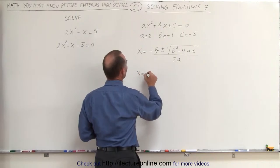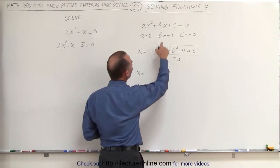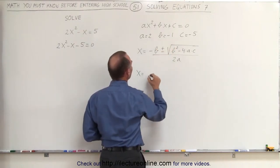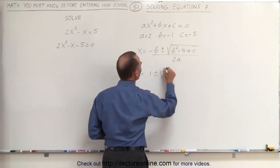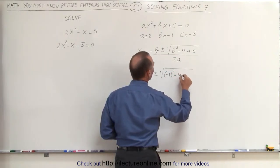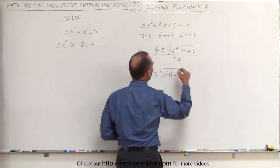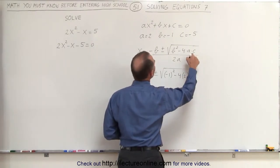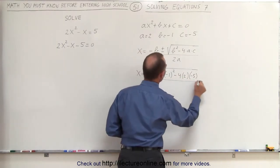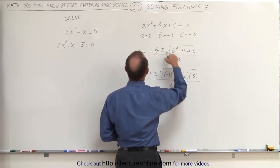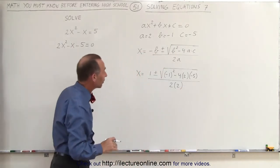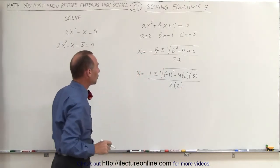x, therefore, is equal to minus b. Well, since b is already equal to negative 1, the negative of negative 1 is positive 1, plus or minus the square root of negative 1 squared, minus 4 times a—a is 2—and c is negative 5. The whole thing is then divided by 2 times a, and a was equal to 2. Now we simply have to simplify that to get the values for x that will satisfy the equation.